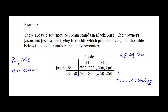What we mean by a dominant strategy is a strategy that you always want to choose no matter what the other player chooses. In this game, players have dominant strategies. If you look at Jason's situation, if Jessica picks $4, Jason would rather pick $4 because $750 is better than $700. Similarly, if Jessica picks $4.50, $800 is bigger than $750, so Jason picks $4 to get $800. For Jason, his dominant strategy is $4.